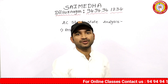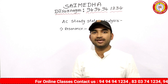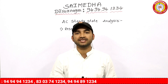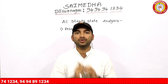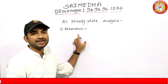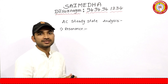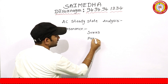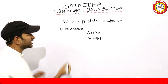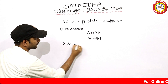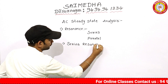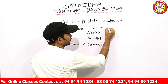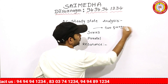Resonance occurs due to two energy storage elements. Those two energy storage elements supply and receive energy. When they are present in a circuit, we will have the chance of resonance. In resonance, we have two types: series resonance and parallel resonance. Both involve two energy storage elements.